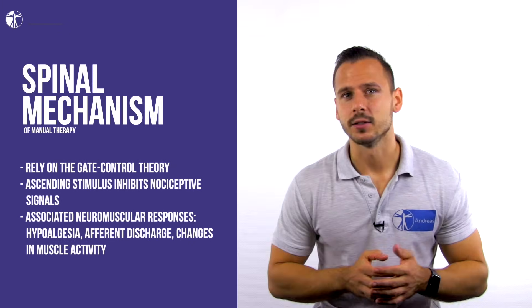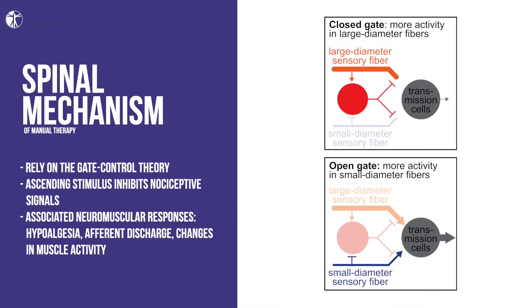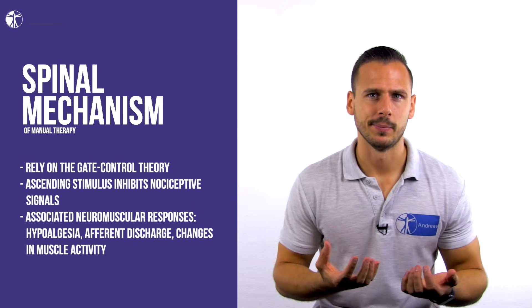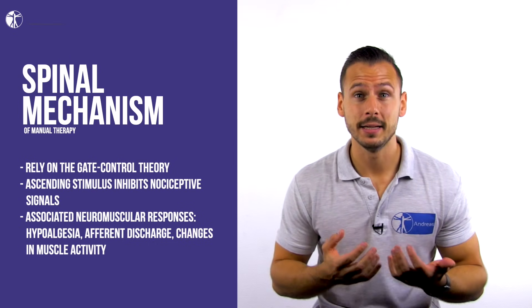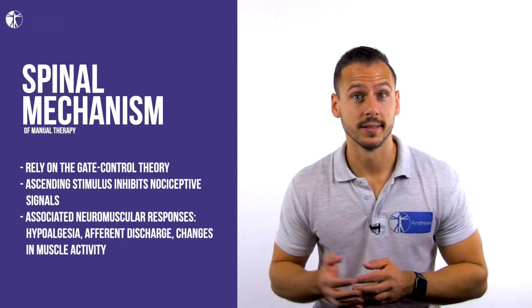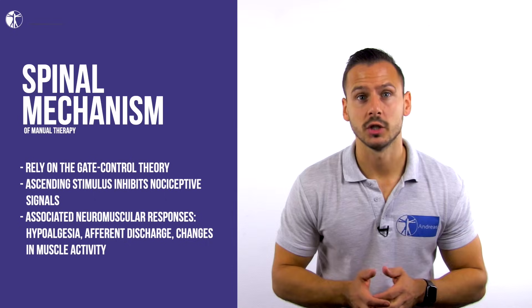Studies examining the spinal mechanism rely predominantly on the gate control theory, where a strong enough ascending stimulus can inhibit nociceptive signals in the spinothalamic tract. Essentially, the stimulation of proprioceptors leads to inhibition at the dorsal horn, and associated neuromuscular responses such as hypoalgesia, efferent discharge, and changes in muscle activity occur.